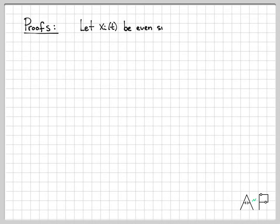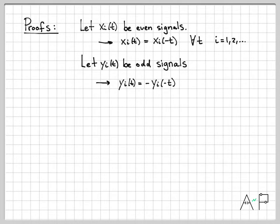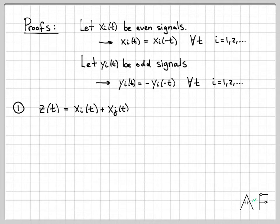We'll have a collection of even signals xi, for i = 1, 2, 3, etc. Every signal xi(t) is even, meaning it satisfies xi(t) = xi(-t) for all time. Similarly, we'll let yi be a collection of odd signals, so every signal yi(t) = -yi(-t) for all time. So x's are always even and y's are always odd in the work to follow.